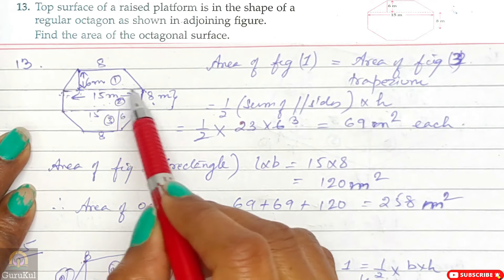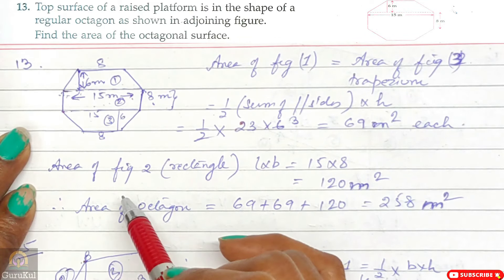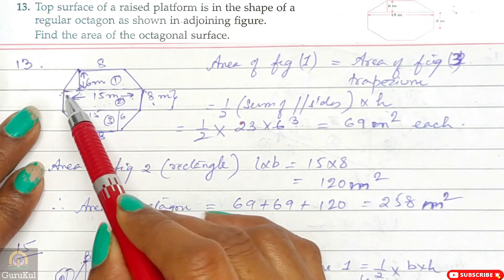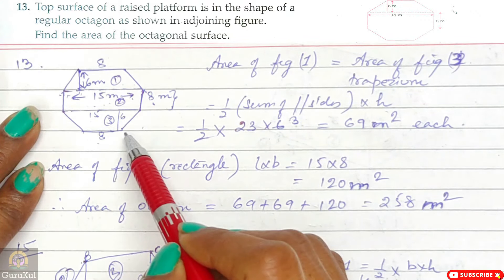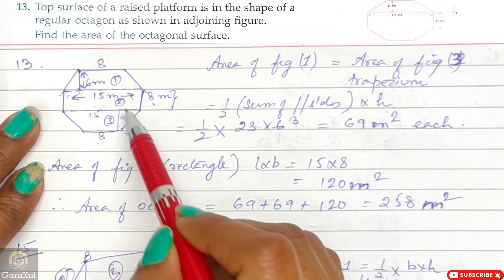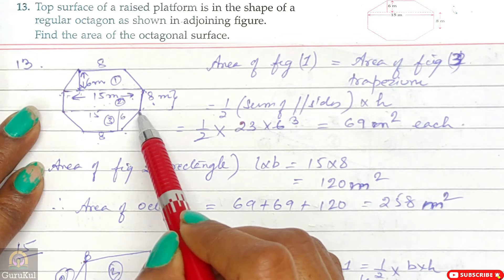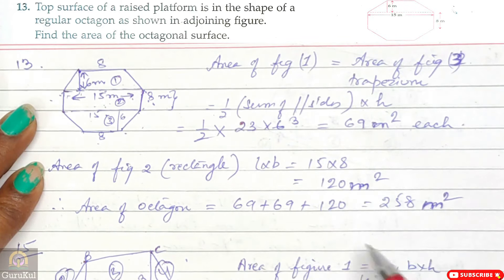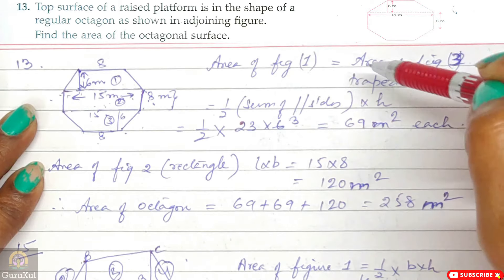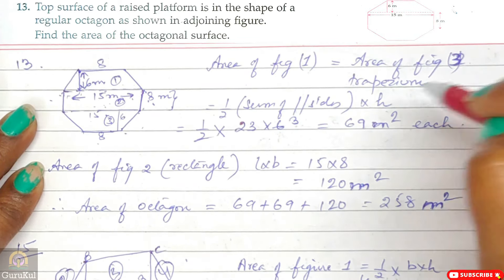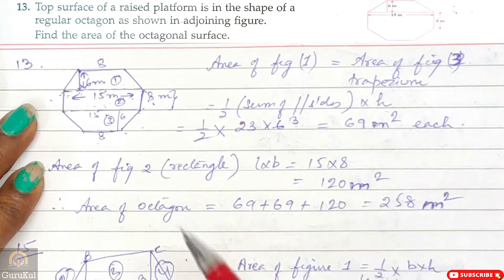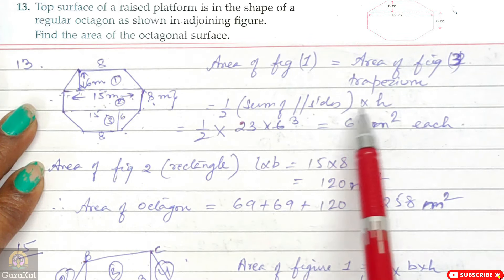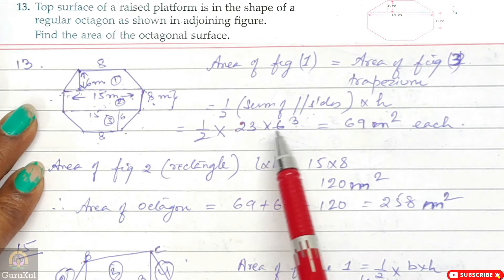Part 1 and Part 3 are trapeziums, and Part 2 is a rectangle of 15 × 8. Area of figure 1 = area of figure 3 (trapezium) = half × sum of parallel sides × height = half × (15 + 8) × 6 = half × 23 × 6 = 69 m² each. The parallel sides are 15 and 8, giving 23.